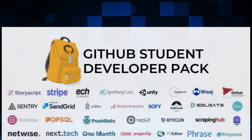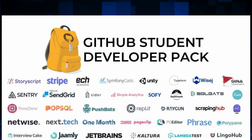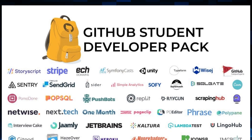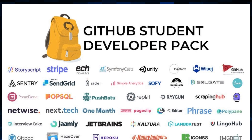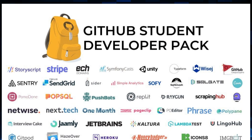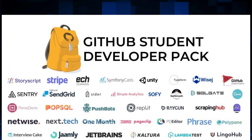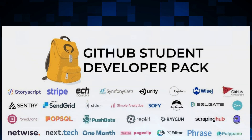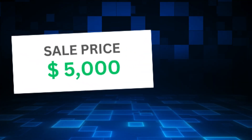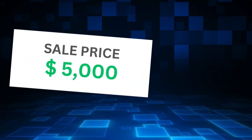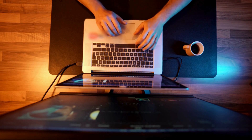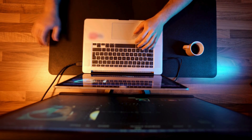These benefits are huge: free domain from Namecheap, Canva Pro education access, JetBrains IDE worth $600 per year, Heroku credits, MongoDB Atlas credits, Unity Student, GitHub Copilot for students, and many cloud, AI, design, and coding tools — all free. This pack literally gives you tools worth $5,000+ for free.